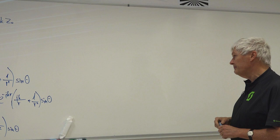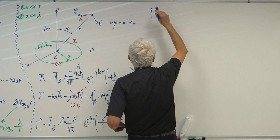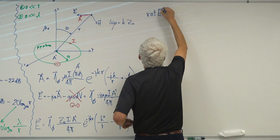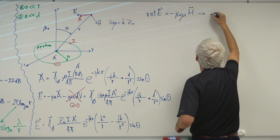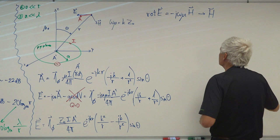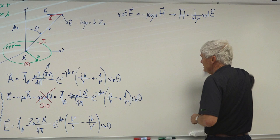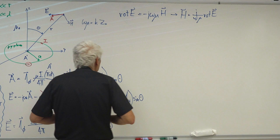For the magnetic field, we can obtain it from Faraday's law: H = (j/ωμ) × curl(E). This is just a mathematical exercise — calculating the curl in spherical coordinates. It is a lot of work, but the result gives the exact magnetic field H at all distances, not just an approximation.